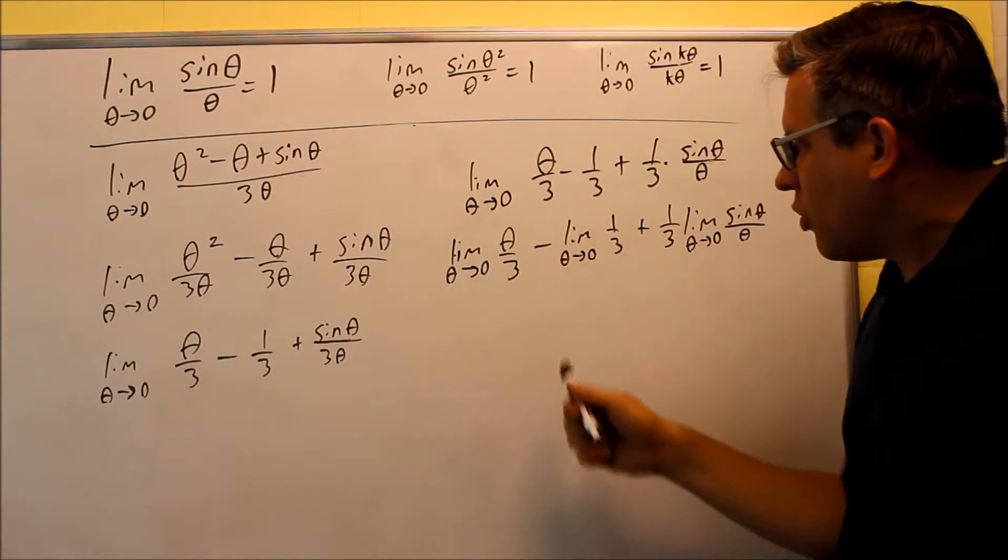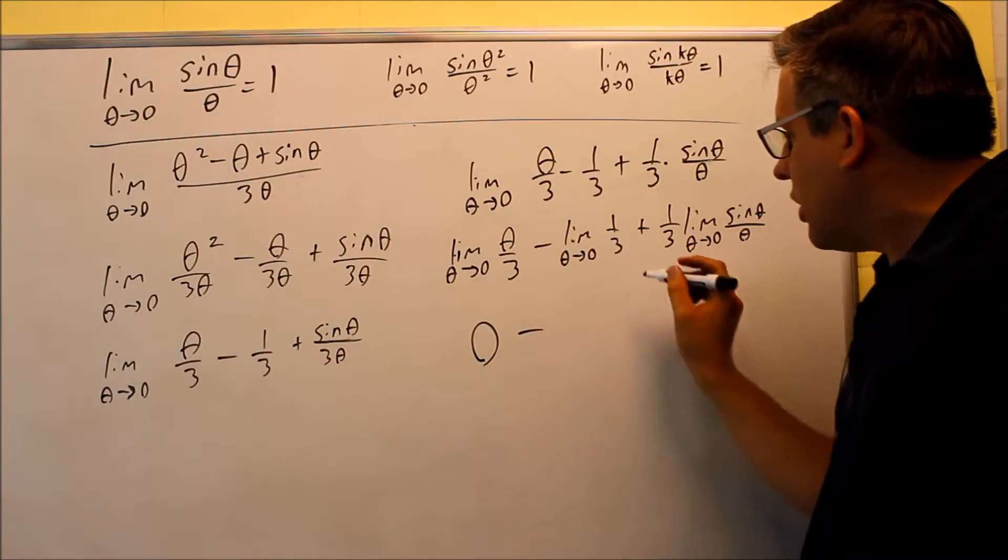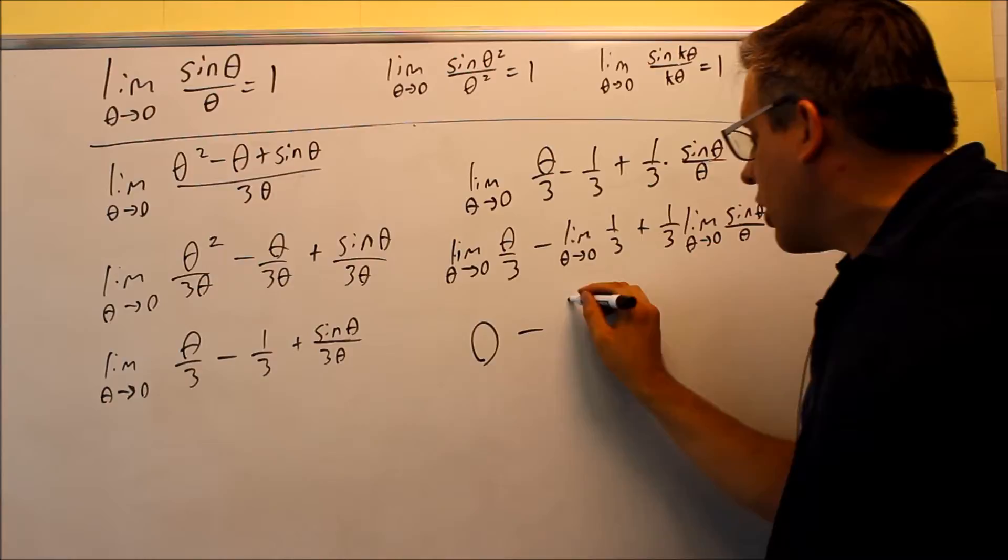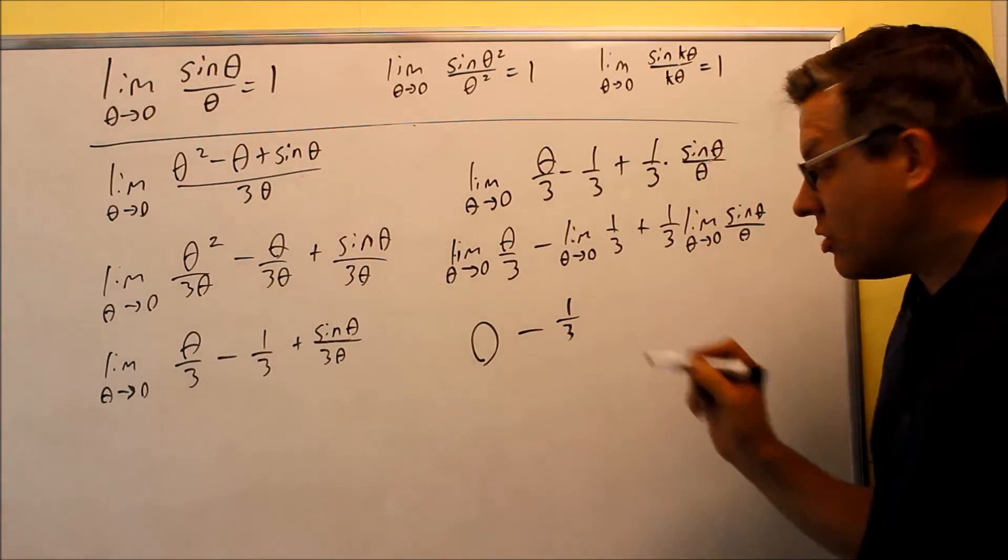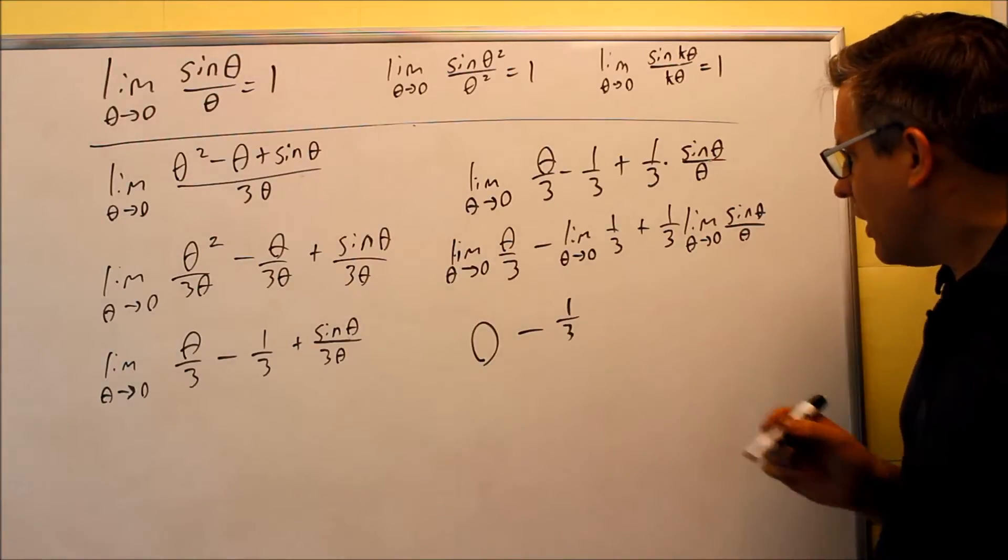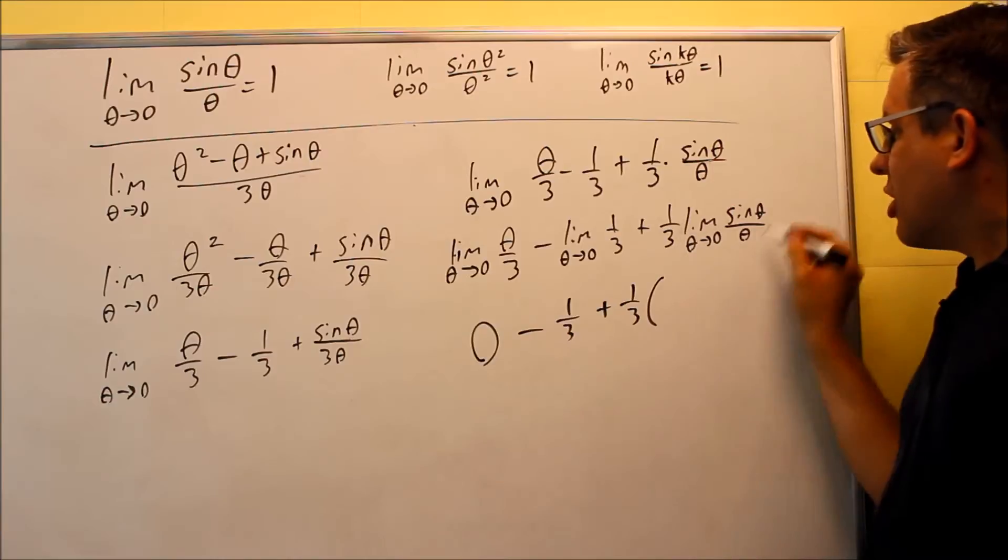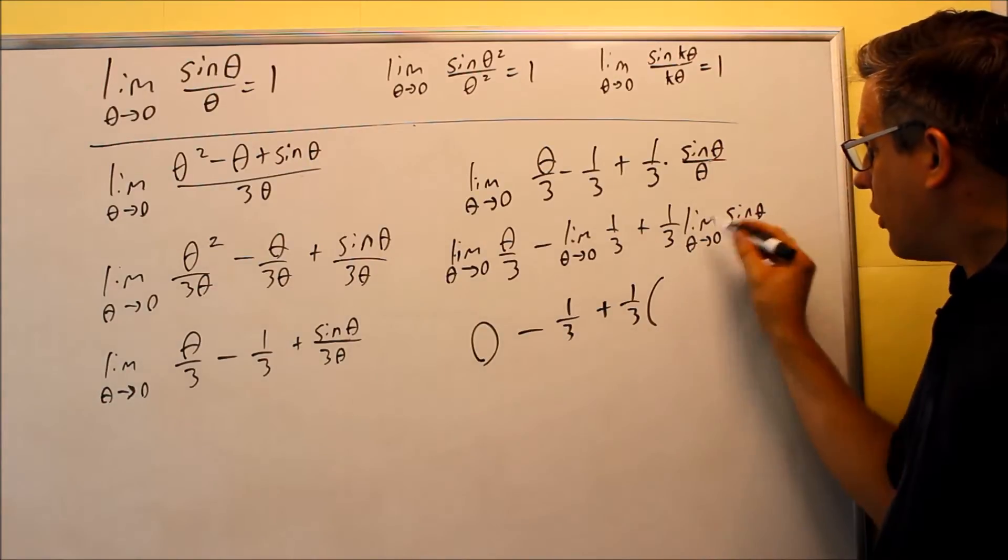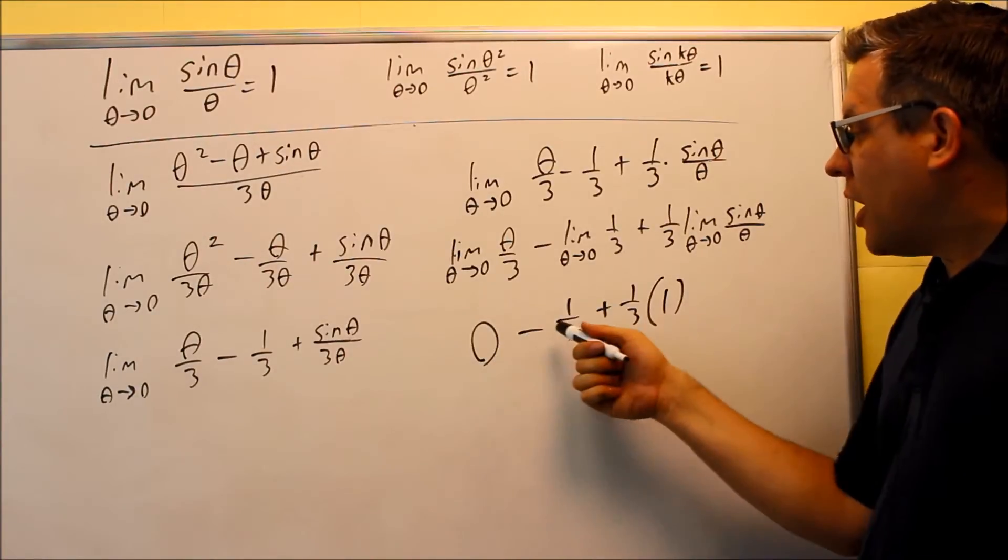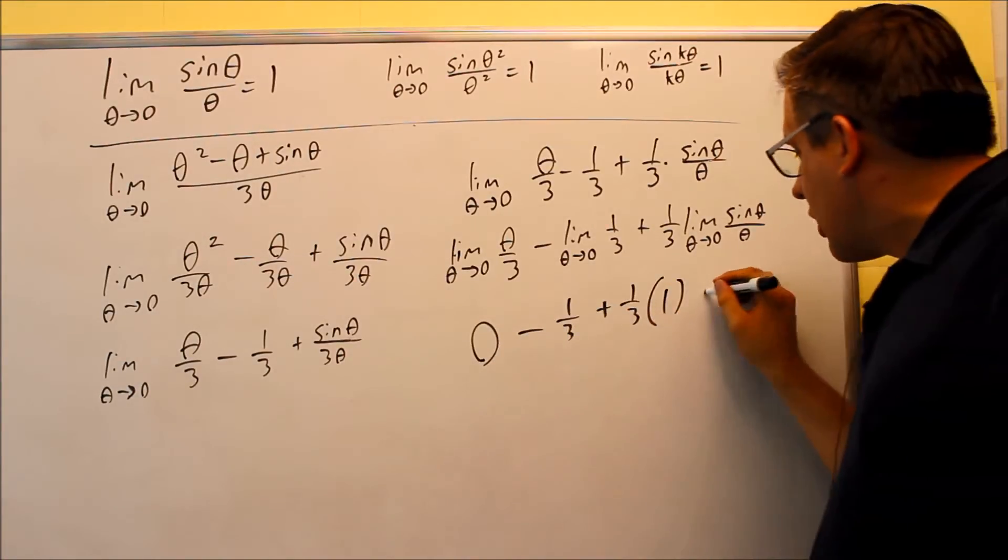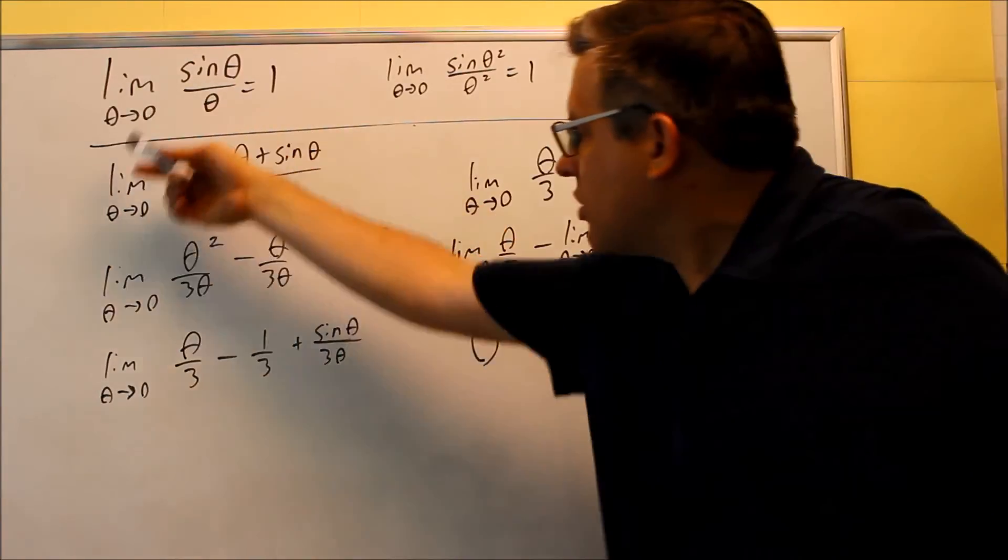If I put a zero into this one, zero over three is just going to be zero. For this one here, I'm only going to get one third. There's nothing to plug in, I don't have any thetas so I'm just going to end up with one third. And then for this, I get one third times this limit here. That's going to be one. So I get zero minus one third plus one third. That's all going to cancel out and give you zero. That would be the answer for the entire limit.